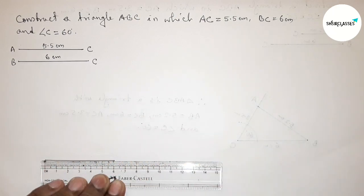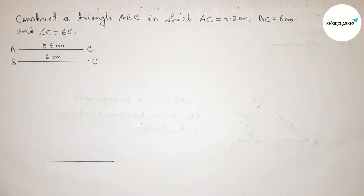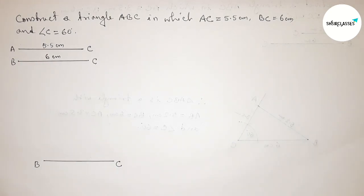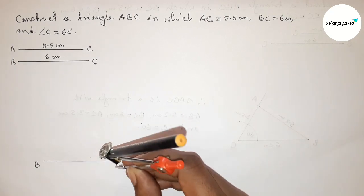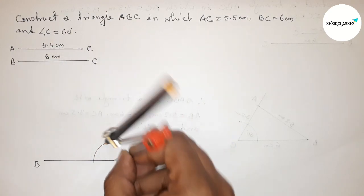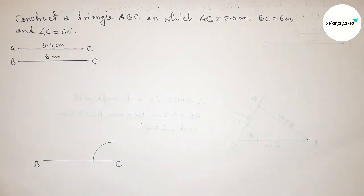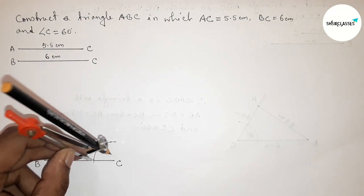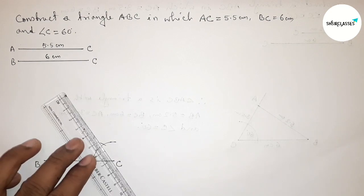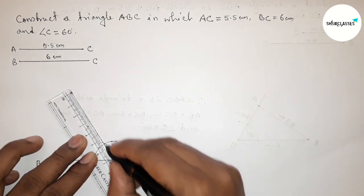Now taking here B and here C, so BC equals... Now drawing 60 degree angle on the point C. So putting the compass on the point C, taking any length and drawing an arc by this way. Now putting the compass here and taking same length and cut here. So now joining this line to get here a 60 degree angle.